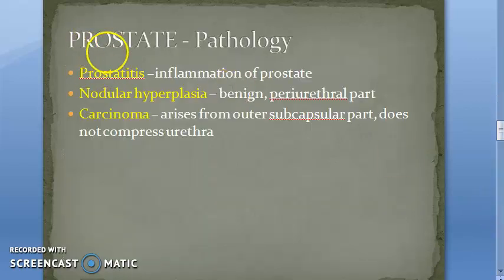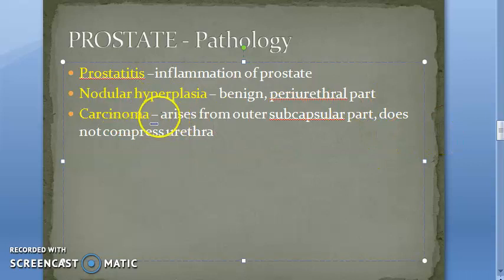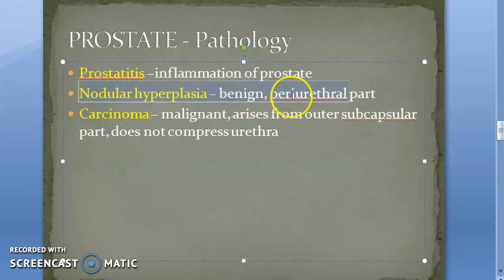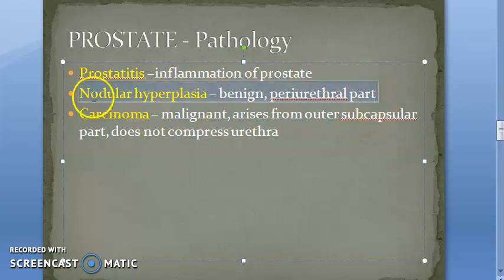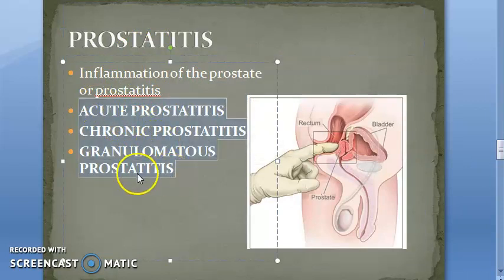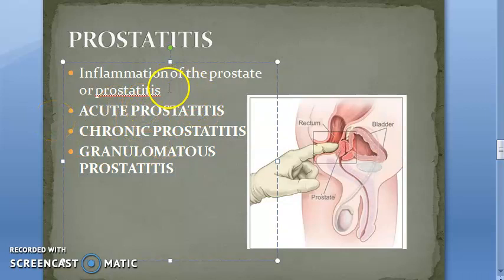Moving on to the details: carcinoma is malignant, nodular hyperplasia is benign. For the exam, nodular hyperplasia is very important, so we will focus mainly on that. Now let us look at prostatitis — you have acute prostatitis, chronic prostatitis, and granulomatous prostatitis. Acute prostatitis is usually caused by bacterial infection, generally related to UTI.